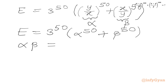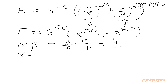Alpha is y over x and beta is x over y. So their product alpha times beta equals 1. Now for the sum alpha plus beta, we write y over x plus x over y. Taking LCM as xy, in the numerator we have y squared plus x squared.